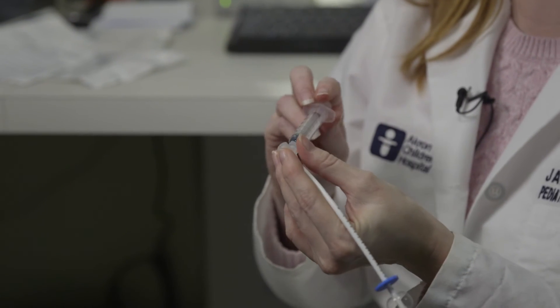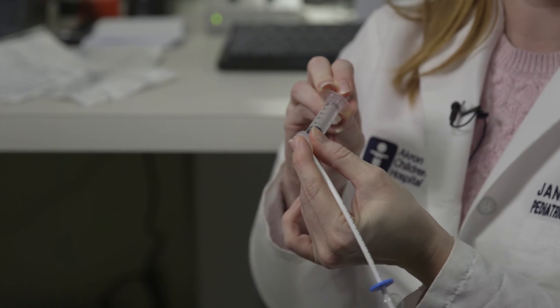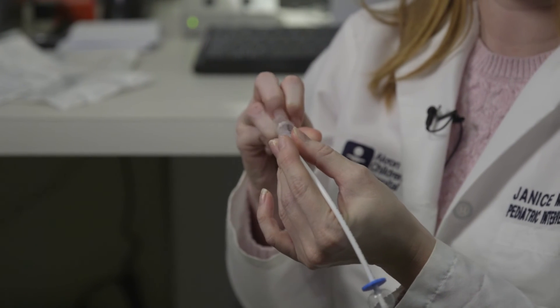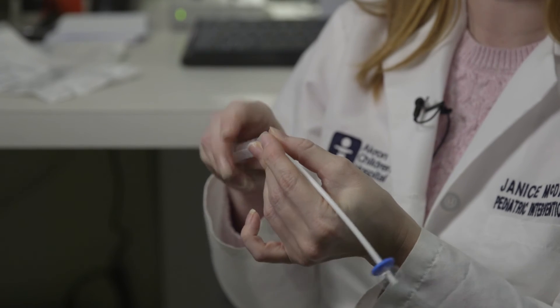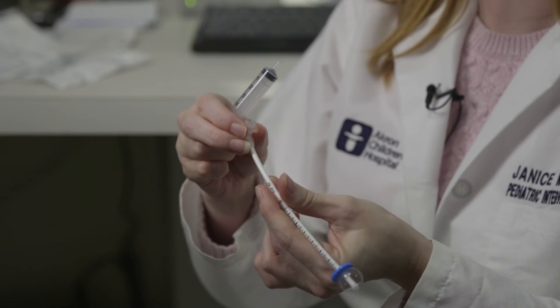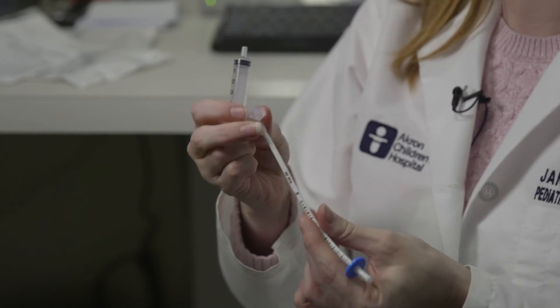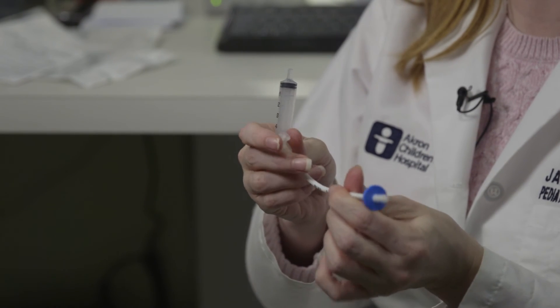When you're done measuring, simply deflate the balloon. You can either do that by putting the slip tip syringe back in and taking the air out, or as an alternative, you can just squeeze the sides of the valve and it will deflate for you.